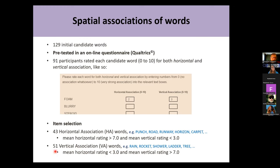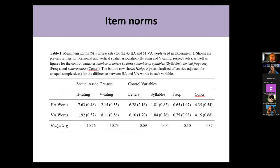We ended up with 94 words: 43 horizontal association and 51 vertical association. We also collected further norms — number of letters, number of syllables, lexical frequency in an English corpus, and concreteness ratings. In these control variables there were no big differences. The exception was concreteness, but we later used it as a covariate in our analysis and it didn't matter much.